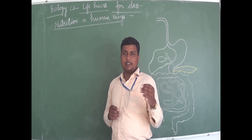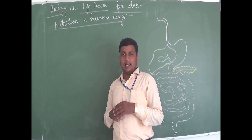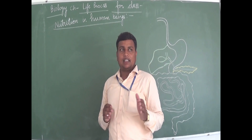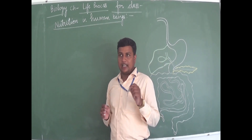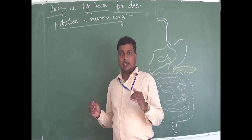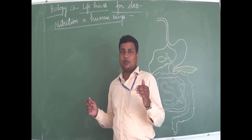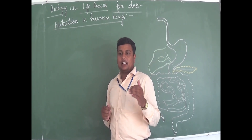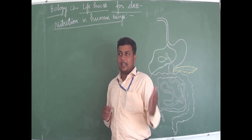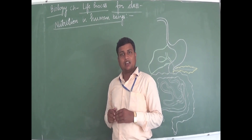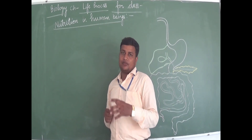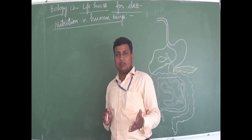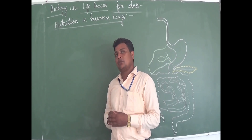Similarly, in paramecium, cilia are present on the entire surface. Cilia are hair-like projections that help in the movement of food inside the body. Paramecium has a specific food spot through which food enters the body, breaks down into the simplest form, and undigested food material is removed from the body.